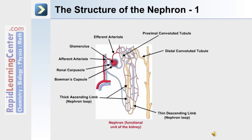Next, the thick ascending loop gives rise to the distal convoluted tubule. The filtrate then enters the collecting ducts.